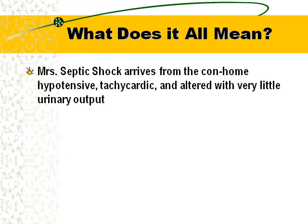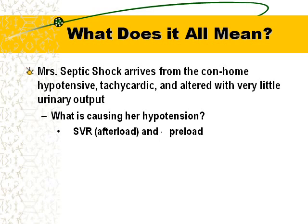Let's do a quick case. Mrs. Septic Shock arrived from a care home: hypotensive, tachycardic, altered, with very little urine output. What's causing her hypotension? She has a decrease in SVR and a decrease in preload — she's dilated out (her afterload is low) and in distributive shock, so her tank is bigger, which also drops her preload.